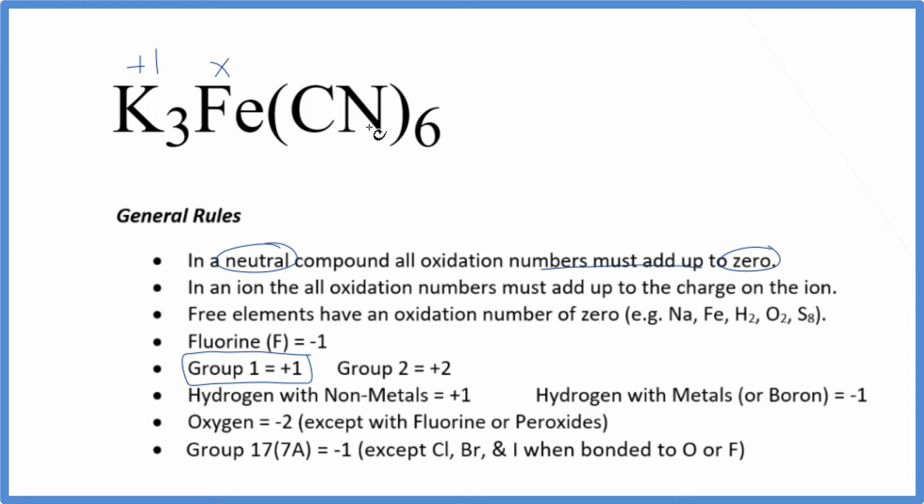And then we get to the carbon and the nitrogen here. That's a little bit complicated. Carbon and nitrogen, they don't show up in our rules here. The trick is that this is called the cyanide ion. And the whole cyanide ion has an ionic charge of one minus.